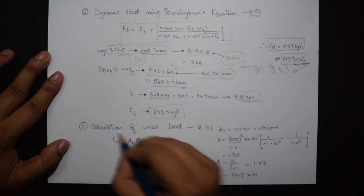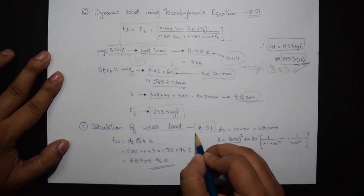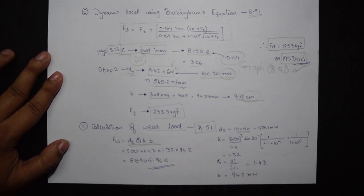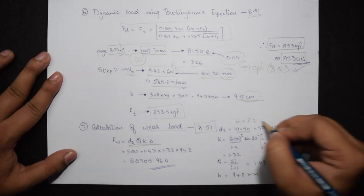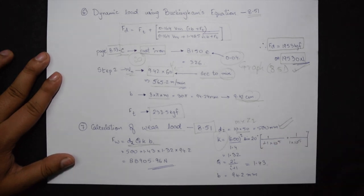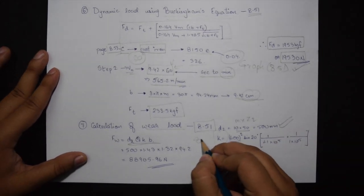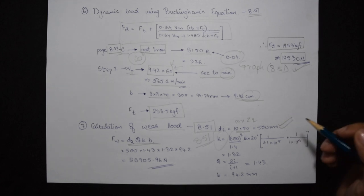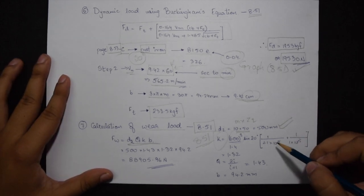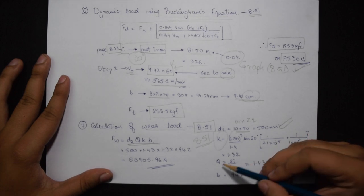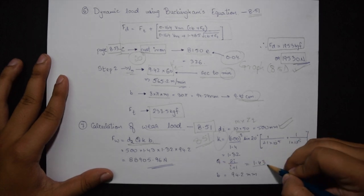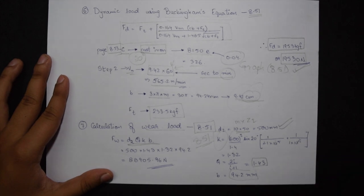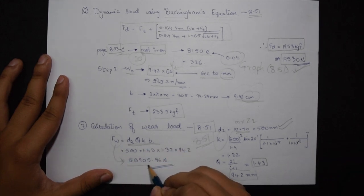The seventh step is calculation of wear load given on page 8.51. We have four different variables. D2 is 10 into 50 or module into Z2 which is 500 mm. K is given on top of 8.51. The value of sigma C was given in the question as 600. Just keep in mind both the materials are different, so the values of E1 and E2 will be different. Q is given just below the formula for K. I being 2.5, I get the value as 1.43. B again from step number 6 I get as 94.2 mm. Substituting all these four values I get FW or the wear load as 88905.96 newtons.